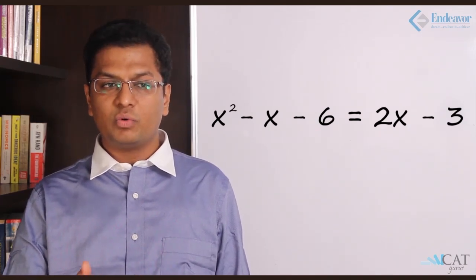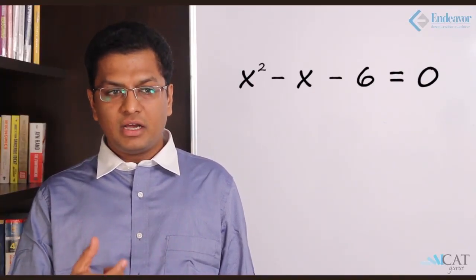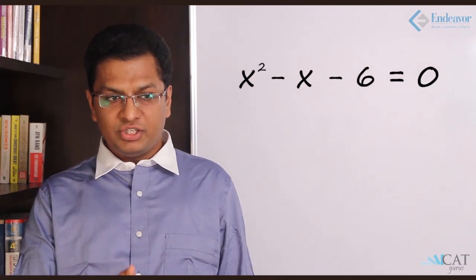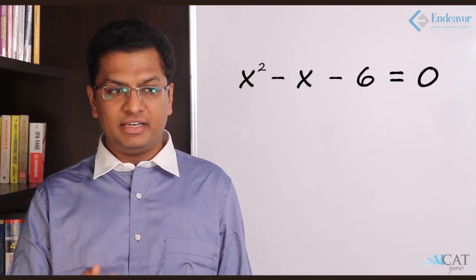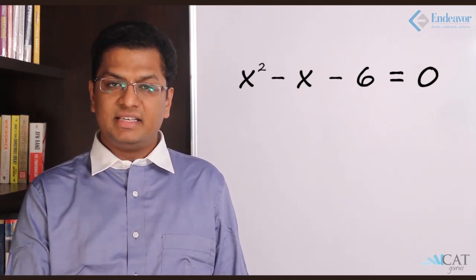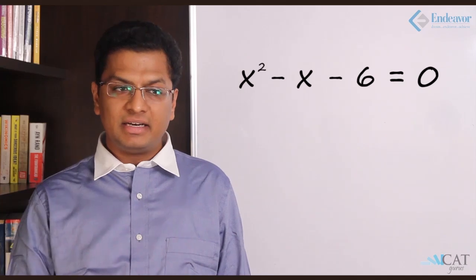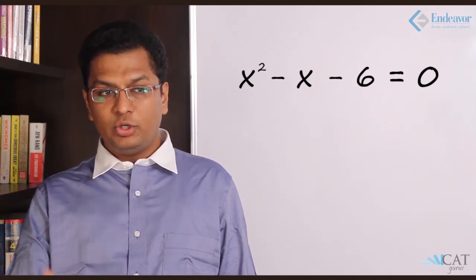So this also is a quadratic equation. Let us look at the methods of solving a quadratic equation. The first method is the splitting or factorization method. Let us take an example: x² - x - 6 = 0. In this case, the coefficient of x² and the coefficient of the constant term have to be multiplied, so it will be 1 × (-6) = -6. Now this -6 has to be broken in such a manner so that we get the middle term which is -1.